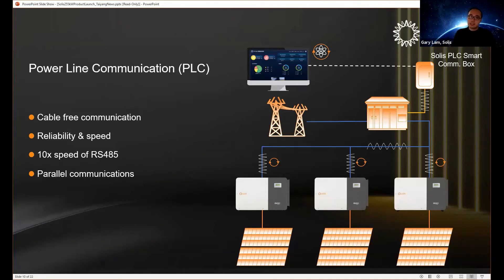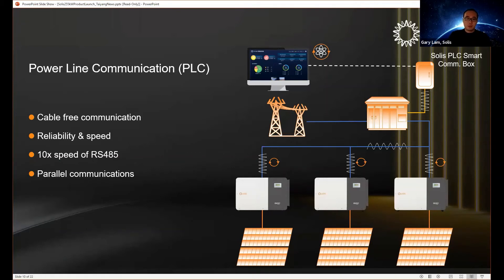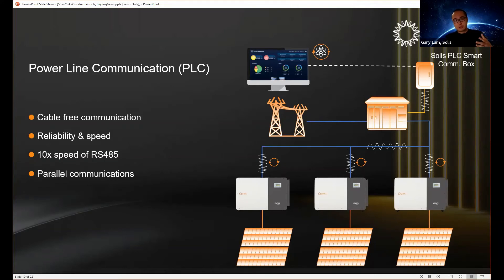Power line communication — PLC — is a real lifesaver. It creates cable-free communication by transmitting signals through the AC power line already installed on site. It is highly reliable because it no longer depends on a small RS-485 wire. It operates at 10 times the speed of RS-485 and — most importantly — creates parallel communication, so all inverters receive commands simultaneously. In a traditional daisy-chain RS-485 method, the first and last inverter experience significant time delay in receiving commands, which complicates future smart-grid applications.